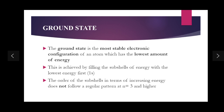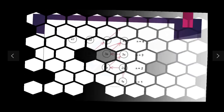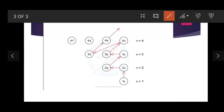The order of sub-shells in terms of increasing energy does not follow a regular pattern at n equals 3 and higher. I'll be referring to a diagrammatic snapshot — let me just go to that. You can see here the diagrammatic snapshot of how atoms fill their shells, how we can write the electronic configuration of an atom in terms of increasing energy. You can see that the 1s sub-shell is the lowest energy.